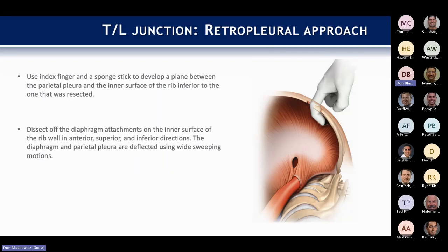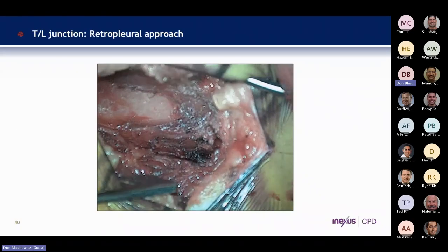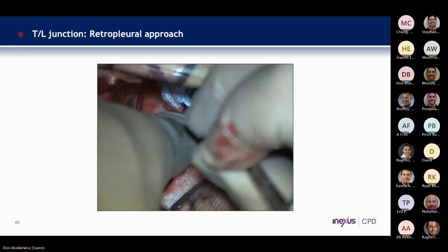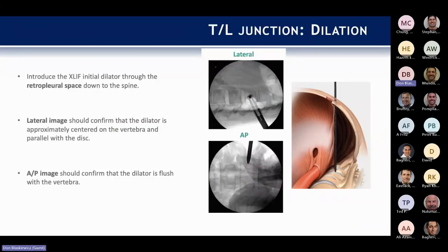If you're in the retropleural plane, this is a bit trickier. You want to get the parietal pleura pulled off the chest wall. Once you remove the rib, very gently with your finger start to sweep it cranially and caudally to develop that plane. Once further down posteriorly, use a sponge stick with super cautious technique, because you don't want to violate the visceral pleura if at all possible. Then once you get down there, you're able to see and separate those structures nicely.